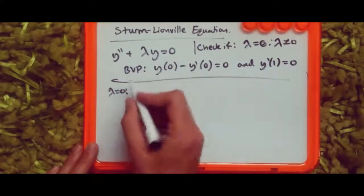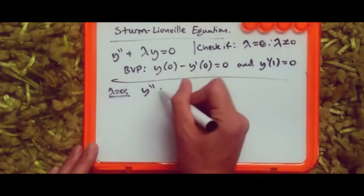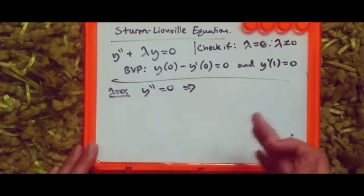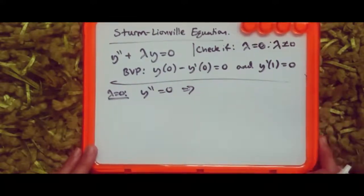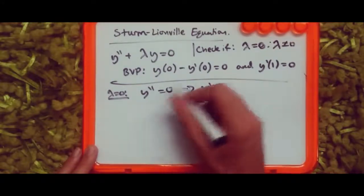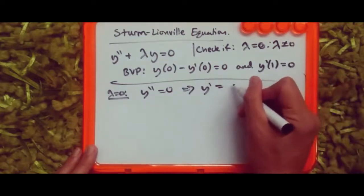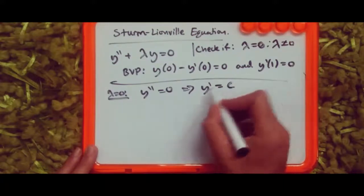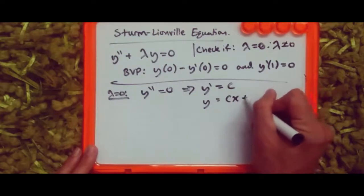Assuming lambda equals zero, the term lambda y vanishes and we're left with y'' equals zero. Integrating once gives y' equals a constant c. Integrating again gives y equals cx plus another constant d.